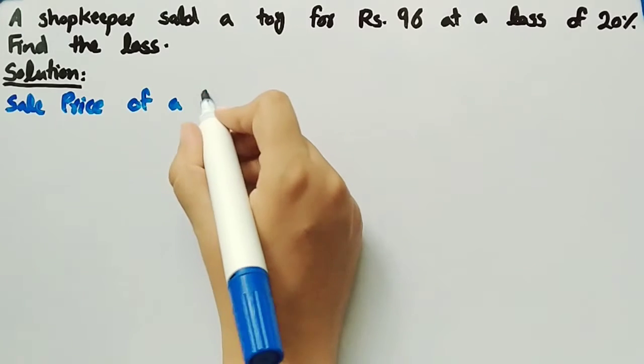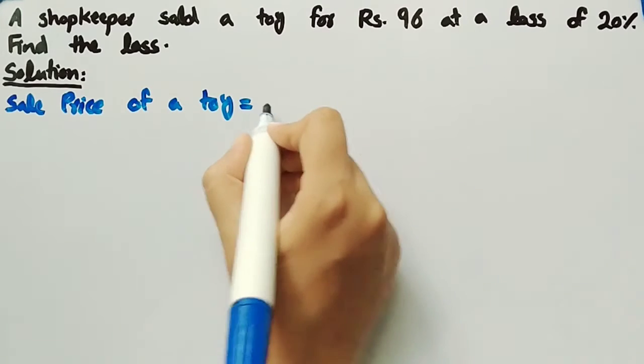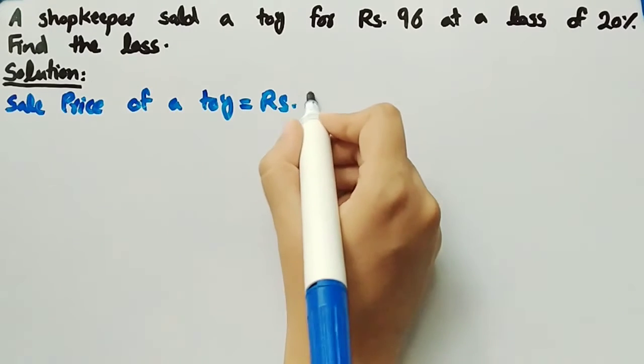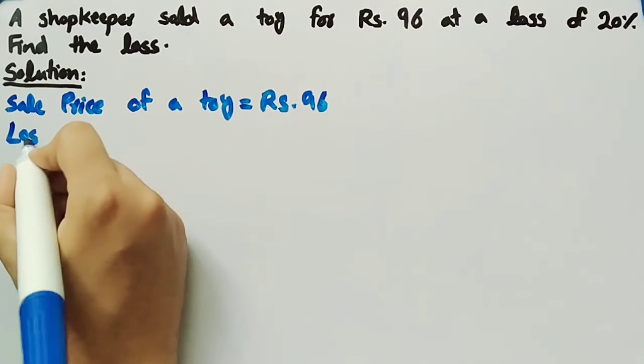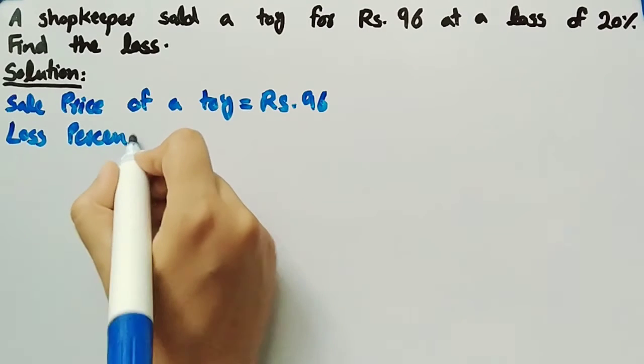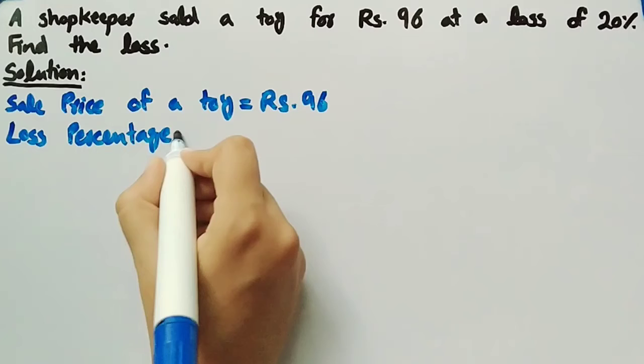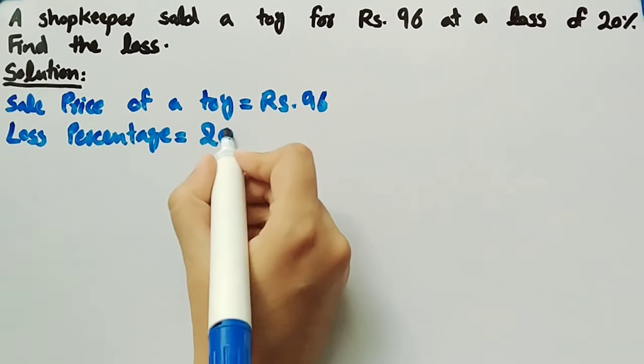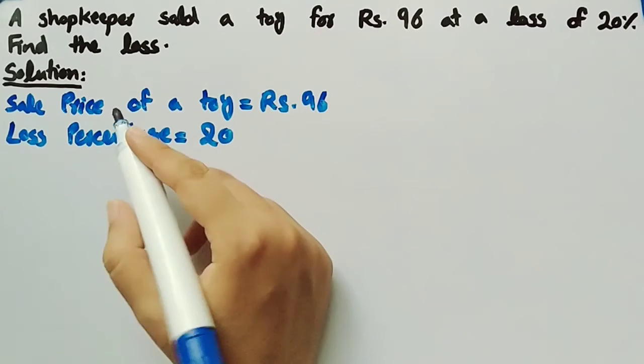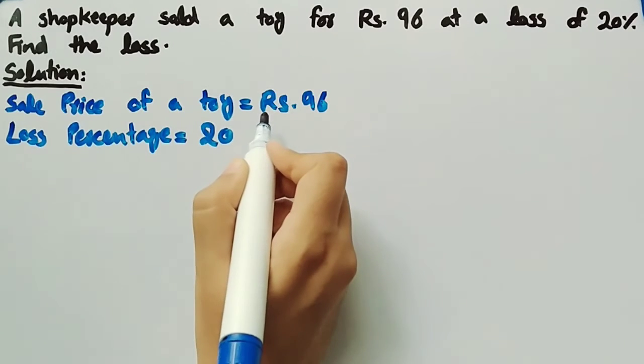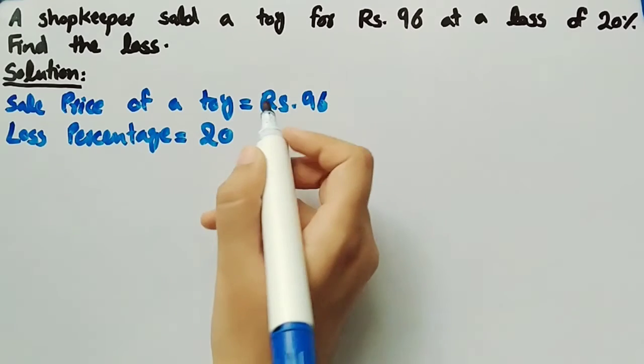Since we have to find the loss and loss is equal to cost price minus sale price, sale price of a toy is given but we have to find cost price.